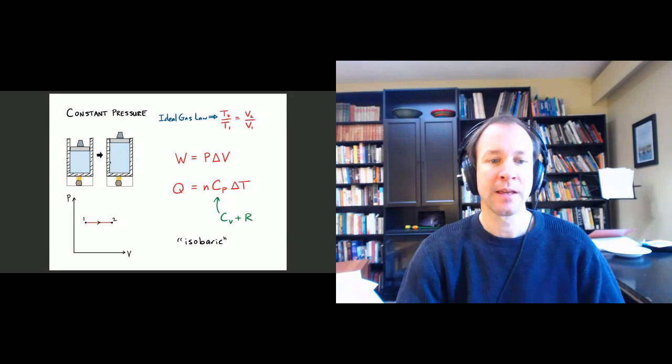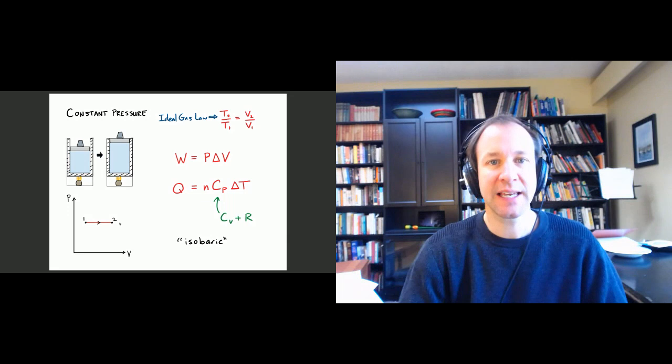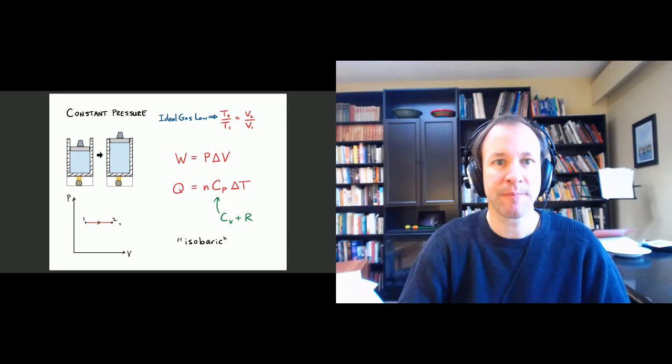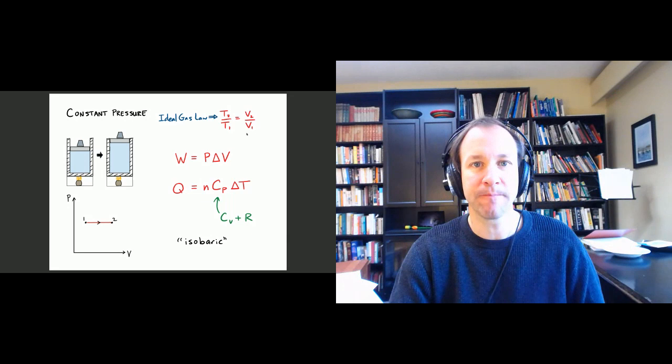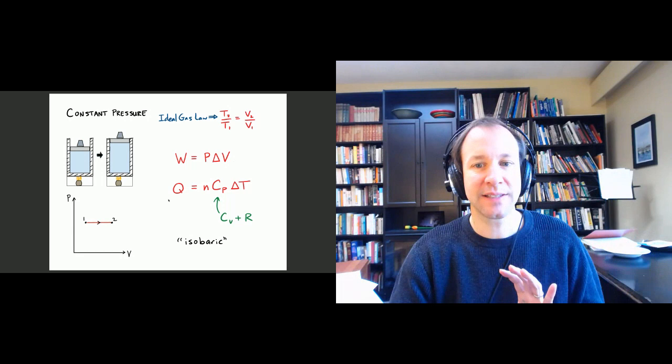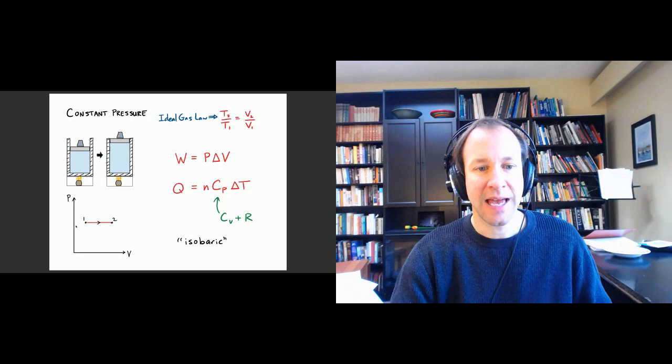This process looks like a horizontal line on the PV diagram. PV over T being constant tells us that V over T is constant — volume is proportional to temperature. A useful form is T2 over T1 equals V2 over V1. In terms of energy, work is given by PΔV. In this case pressure is constant, so we don't need any fancy integration — it's just PΔV, which is the area under the curve, a rectangle.